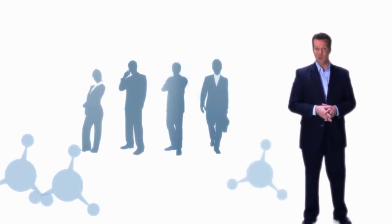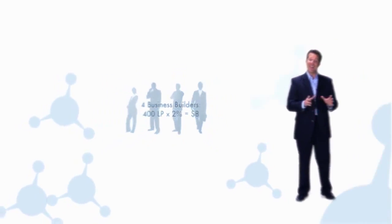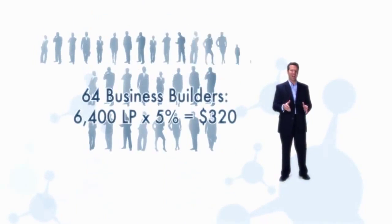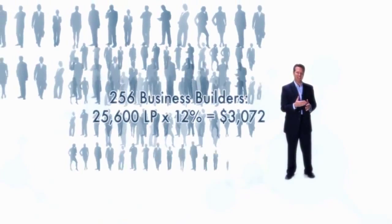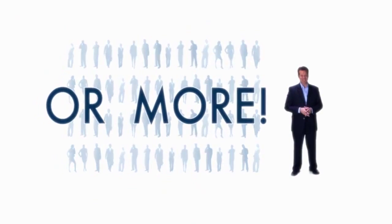If you sign up four people who each commit to purchasing a minimum monthly 100 LP order, and they sign up four people who do the same, and this activity continues to duplicate, you can earn close to $4,000 a month. Now that's income to get excited about.